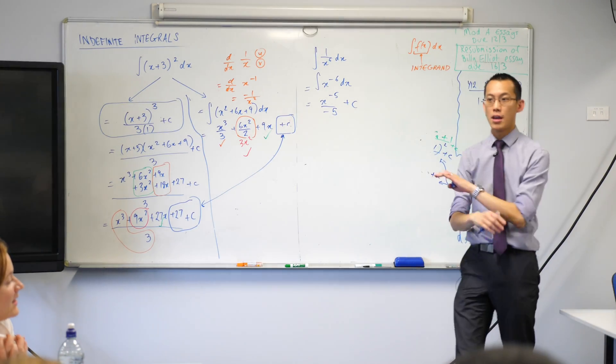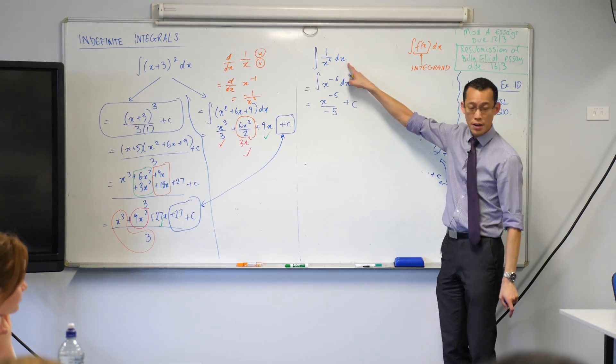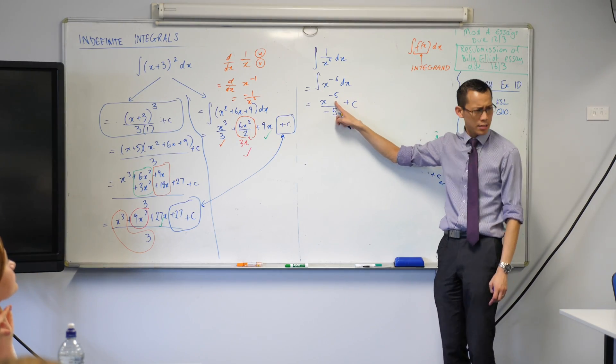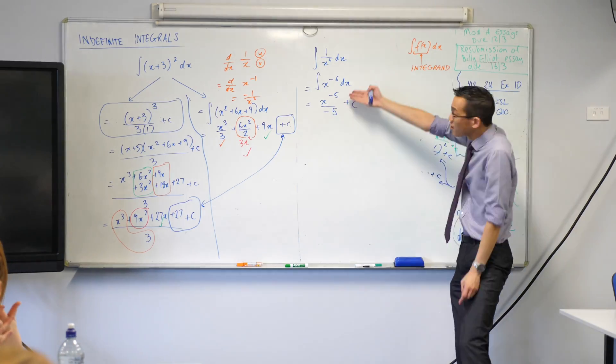Now at this point, we're pretty much done. The integration is finished. But your original question had no negative indices in it, and we tend not to write negative indices. We only did it so we could integrate, right?